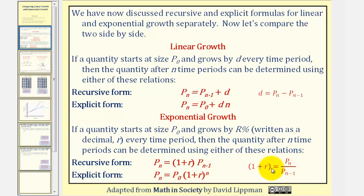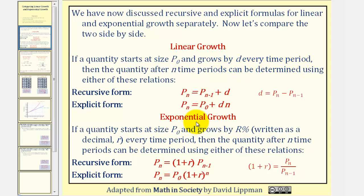Notice how if we know the growth multiplier, we can also determine r. The explicit equation for exponential growth is p sub n equals p sub zero times the quantity one plus r raised to the power of n. So for linear growth, the population is growing by d units every time period. And for exponential growth, the population is growing by r percent each time period.